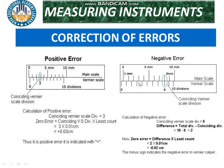To calculate the negative error, we identify the coinciding division. The total divisions on the Vernier scale are 10, and the coinciding division here is 8. The difference is: total divisions minus coinciding division = 10 − 8 = 2. Negative error = difference × least count = 2 × 0.01 mm = 0.02 mm. This is the negative error.